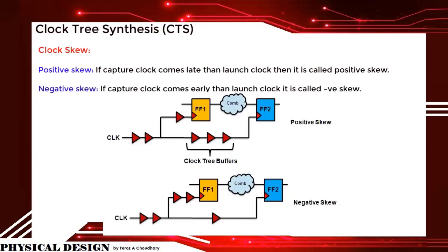There are different types of clock skews: positive skew, negative skew, global, local, and useful skew. Positive skew is when the capture clock comes later than the launch clock. For example, flip-flop 1 has a delay of three buffers whereas flip-flop 2 has a delay of five buffers, so flip-flop 1 receives the clock first — that is positive skew. In negative skew, flip-flop 1 has more delay compared to flip-flop 2, so clock 2 waveform appears before clock 1 — that is negative skew.